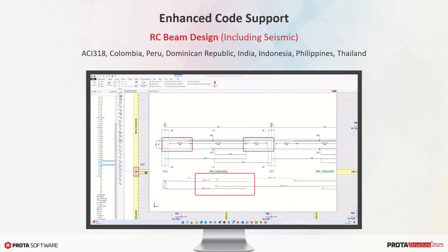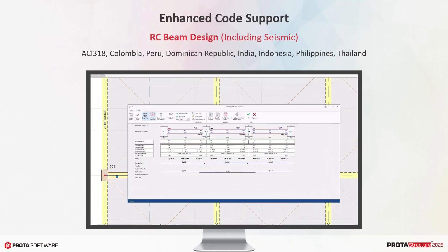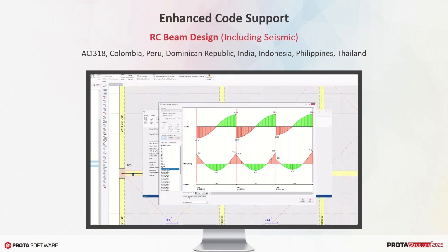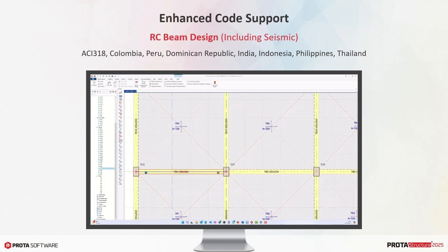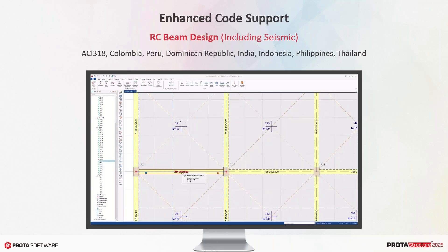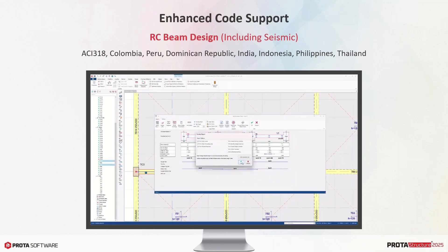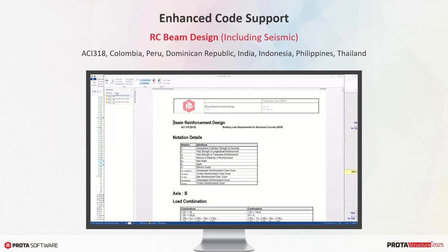These new additions and improvements sit on top of the existing global building checks — irregularity checks, relative drift checks, non-structural member checks, etc. Protostructure is much more complete in terms of non-seismic and seismic design checks in this new version.